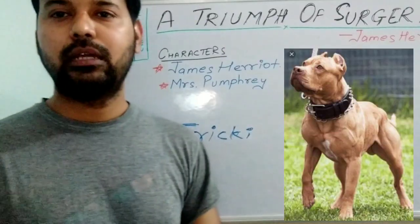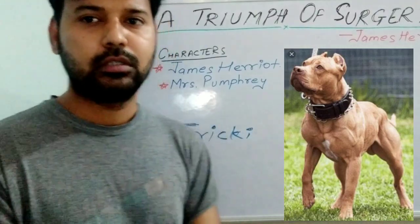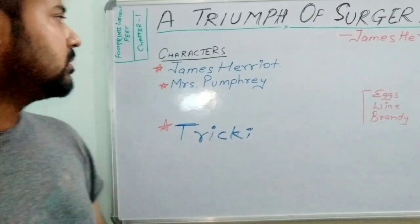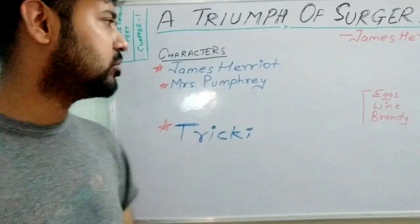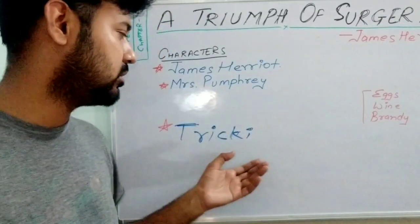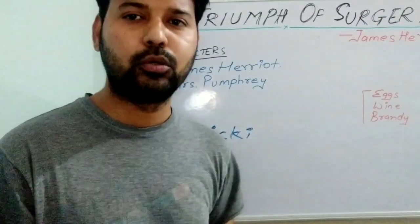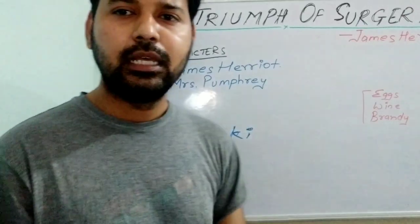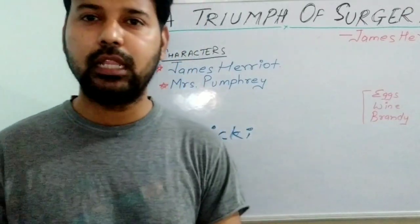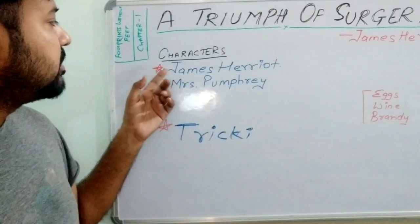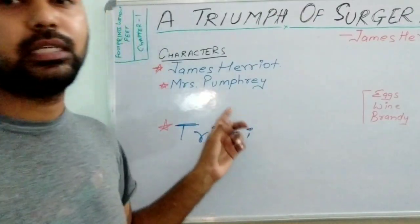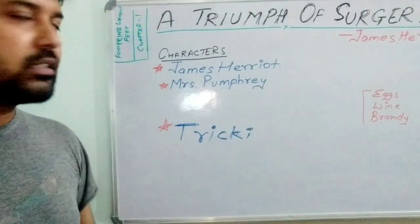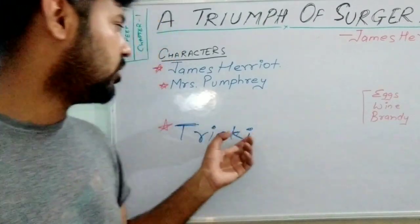Tricky was improving in his health, and slowly, from a bloated and fat dog, he had developed into a good, muscular dog. As time passed, James Herriot started thinking about how long he should keep Tricky. Because Tricky was now very healthy with good muscles, it was time to release him and give him back to Mrs. Pumphrey. When James Herriot found that Tricky was in good health and good shape, he called Mrs. Pumphrey, the main owner, to inform her.